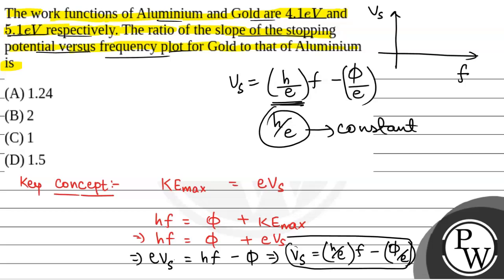So the ratio of slope of the stopping potential versus frequency plot from gold to that of aluminum is 1 because the slope is constant. So the correct answer will be option C. Hope you all understood it well. Best of luck.